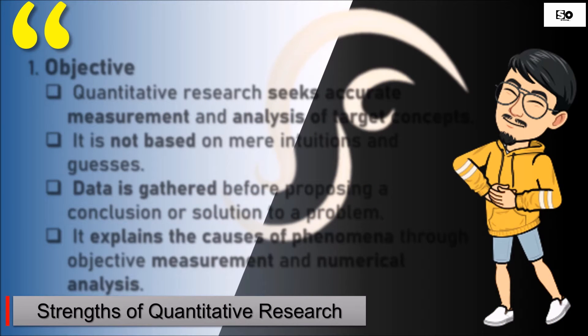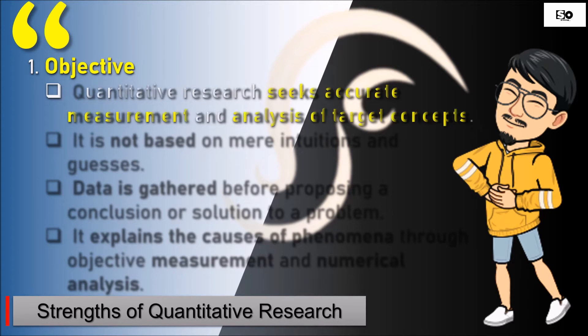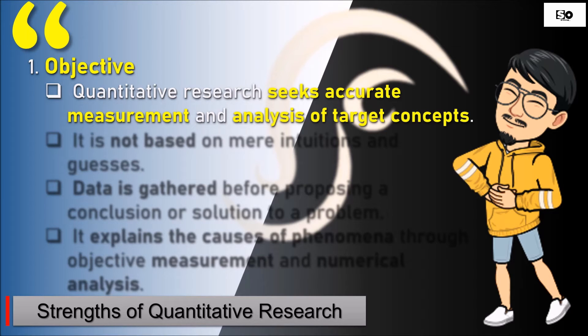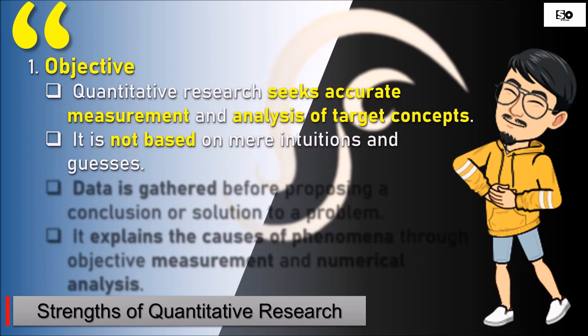Topic 2: Strengths of Quantitative Research. First, objective - quantitative research seeks accurate measurement and analysis of target concepts. In quantitative research, this is the investigation of information with accurate measurement and analysis of our questions. It is not based on mere intuitions and guesses. The data we use comes from a source and is not based solely on personal views.